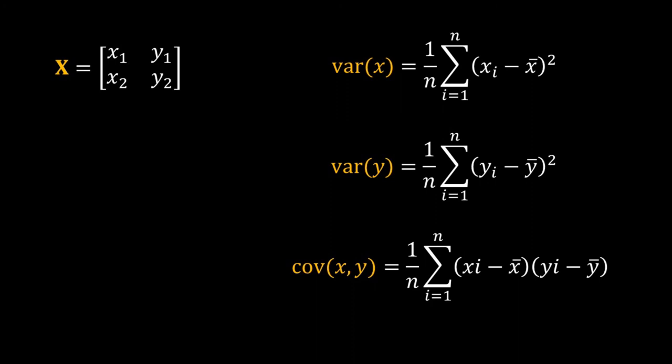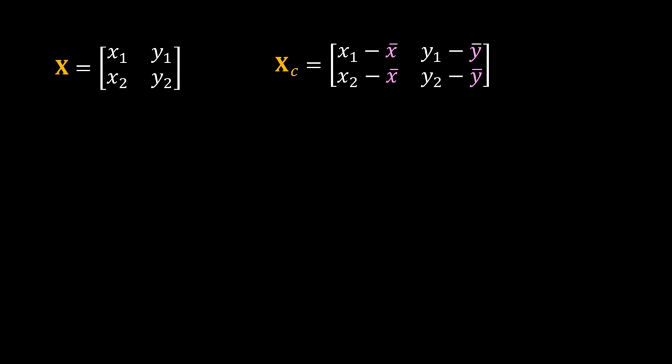Now I want to calculate these variances not just by this type of summation but using matrix operation. For that calculation I need XI minus X bar and YI minus Y bar. Here X bar and Y bars are the mean. So I will subtract X bar from all entries of X in the data matrix. Similarly I will subtract Y bar from all the entries of Y in the data matrix. In this way I will get a new matrix and this matrix is called a centered matrix.